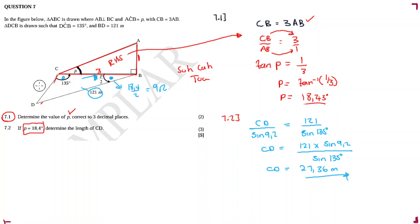Could we use the cosine rule? It looks like we can, since we have 3 and 121 with an angle in between — but we cannot use the cosine rule because 3 is not the actual length of CB, it's just a ratio. Hence I did not start with the cosine rule. This concludes question seven. I hope you gained something from this.